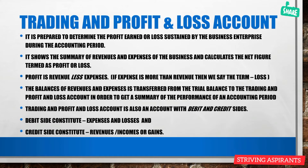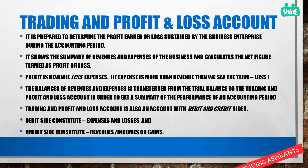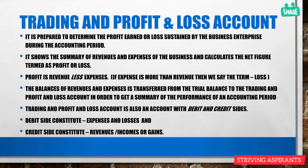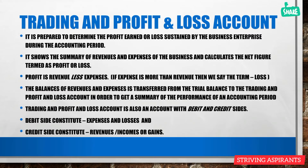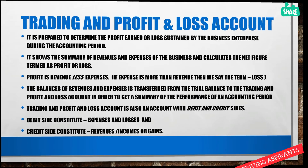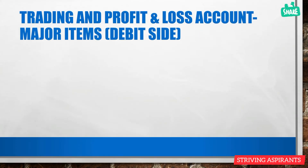After the preparation of the trial balance, we take all the balances of revenues and expenses from the trial balance and post them into the trading and profit and loss account. This account has debit and credit sides. On the debit side, we post all expenses and losses, and on the credit side, we post all revenues, gains, or incomes received by the company.